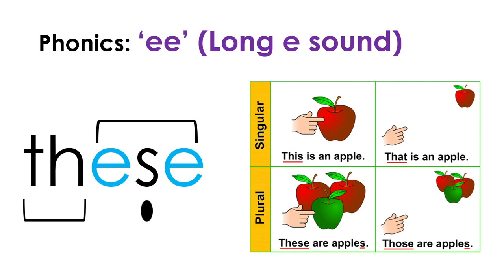And our final word — can you guess what this word is? The word is 'these.' You would say 'these' when you have something nearby that you're pointing to. If there are more than one of them and they're right next to you and you're pointing to them directly, you would say 'these are apples.' So that is the word 'these,' and that is the end of all the words for today's split blend.